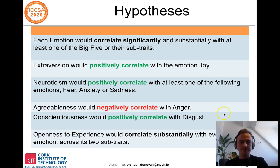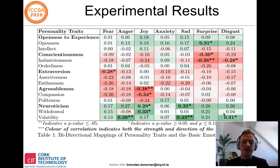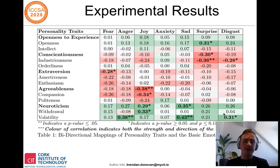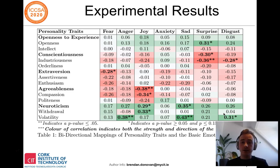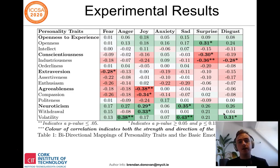In terms of our experimental results, we have an output of a correlated mapping between personality traits and the basic emotions. Personality traits are on the left-hand side and basic emotions on the top. The direction of the correlation between any two variables is indicated by colour: red indicates a negative relationship, white no relationship, and green a positive relationship. The magnitude or strength of that relationship is indicated by the effect size and shade of colour, with darker shades indicating a stronger relationship.